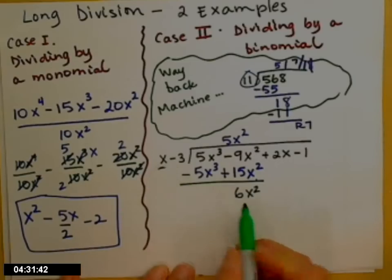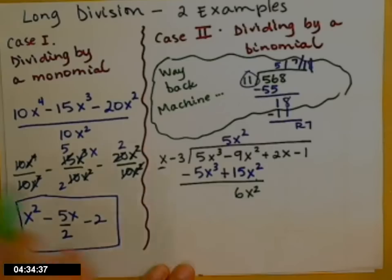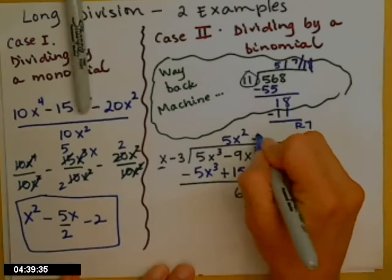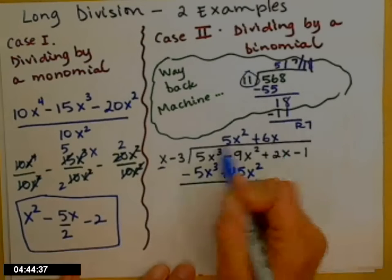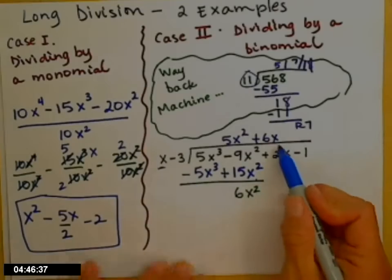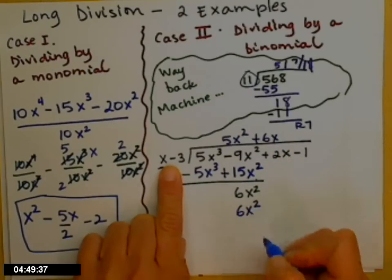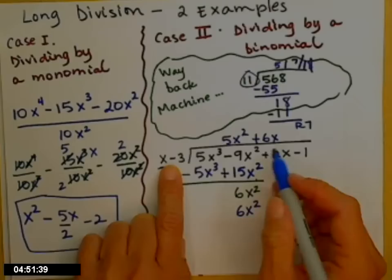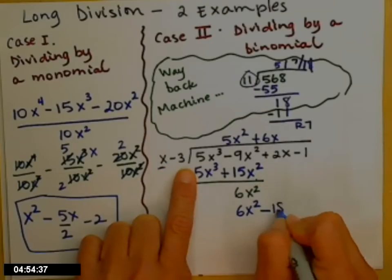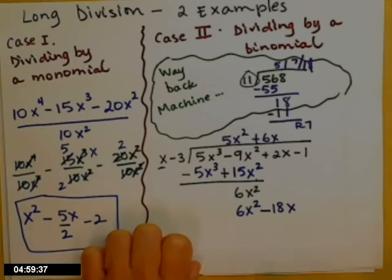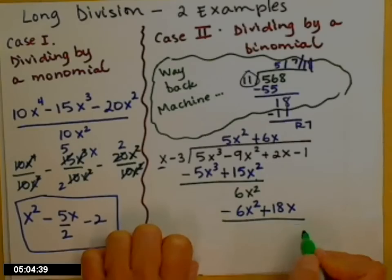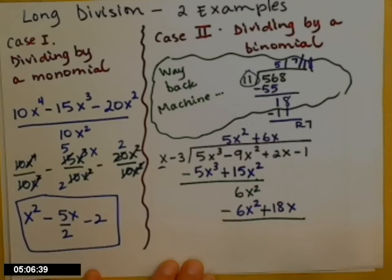x — the biggest term out in front — times what to get exactly 6x squared? You tell me positive 6x, so we write plus 6x. Multiply everybody: 6x times x gives 6x squared — that's what we wanted — and 6x times negative 3 gives negative 18x. Multiply, then change signs and add. The 6x squared terms go away — that's what we needed.